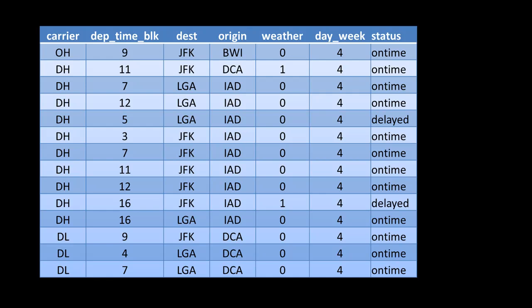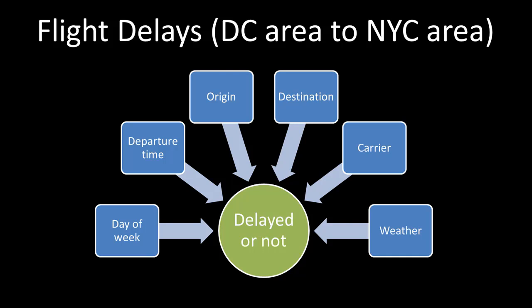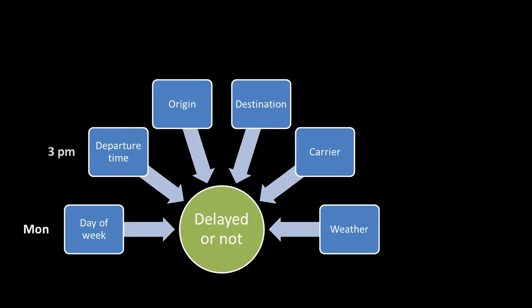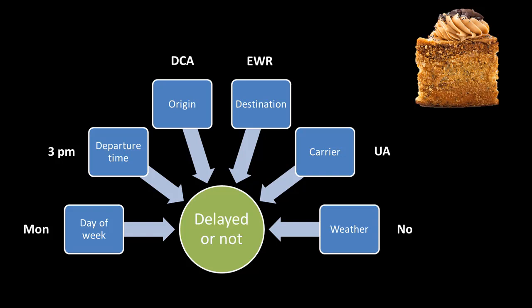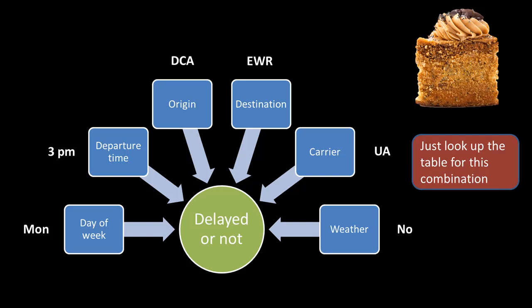With 2,200-plus rows, you say: I already know the Naive Bayes algorithm, so I can put this into tabular form, look up my combination, and finish the problem. Your flight is Monday at 3 p.m. from Washington National to Newark on United Airlines with no weather problem. It looks like a piece of cake — just construct the big table like we did for gender and country, look up this particular combination, see how many flights were delayed versus not delayed, calculate the probability, and you're done.